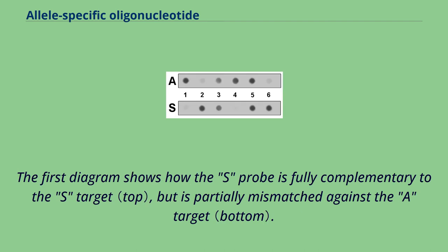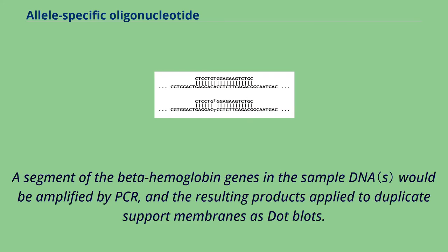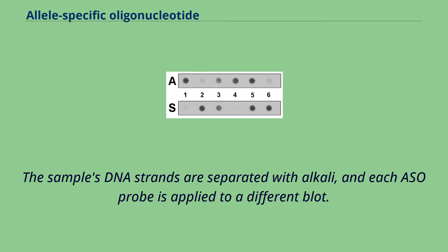The first diagram shows how the S-probe is fully complementary to the S-target, but is partially mismatched against the A-target. A segment of the beta hemoglobin gene in the sample DNA would be amplified by PCR, and the resulting products applied to duplicate support membranes as dot blots. The sample's DNA strands are separated with alkali, and each ASO probe is applied to a different blot.